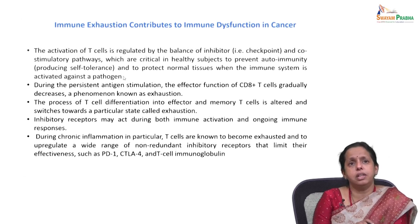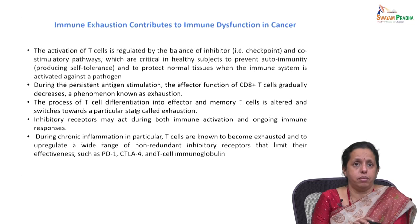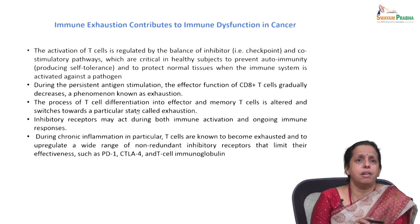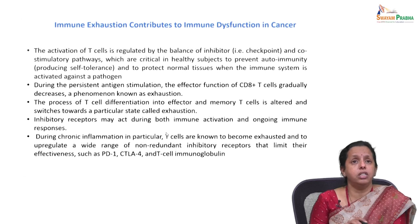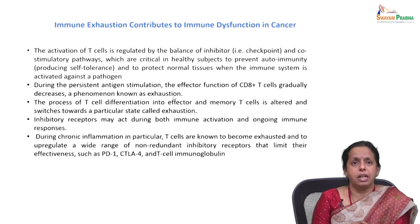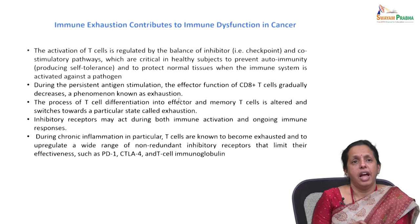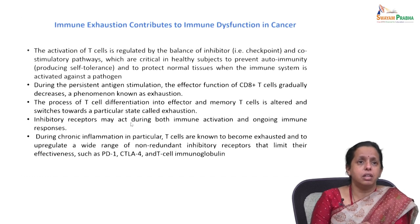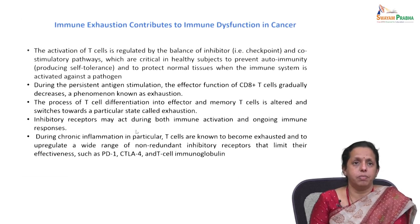T cell activation is regulated by the balance of inhibitory checkpoint and co-stimulatory pathways. This balance is critical in normal healthy cells to prevent autoimmunity (self-tolerance) and protect normal tissues when the immune system is activated against a pathogen. During long-term antigen stimulation — as occurs in cancer — inhibitory receptors may act during both immune activation and ongoing immune response.